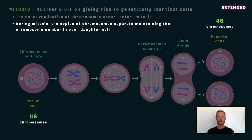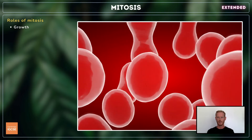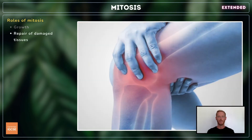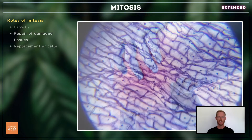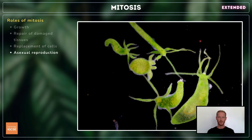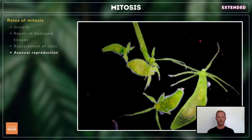This means that mitosis of a human body cell containing 46 chromosomes will result in the formation of two identical daughter cells, each with 46 chromosomes. Mitosis is essential for growth as it enables organisms to increase in size by producing new cells. It also plays an important role in healing or the repair of damaged tissues, the continual replacement of old worn out cells, and in asexual reproduction — that is the production of genetically identical offspring from one parent.